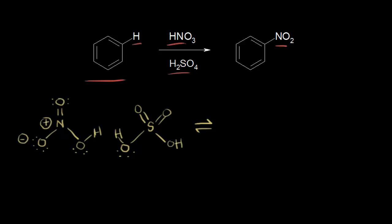Let's look at the mechanism for the nitration of benzene. We start with the dot structure for nitric acid, and here's the dot structure for sulfuric acid.